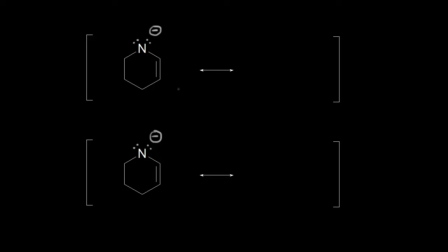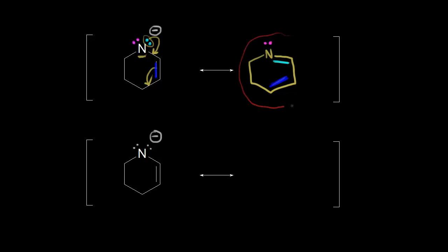Let's do another example. I'll start with the wrong way to do it and then talk about the correct way. A student might say: I have a negative one formal charge on this nitrogen, so I could take this lone pair of electrons and move it into here, which would push these electrons over to here. Let me draw what some students might think is a correct resonance structure — following the electrons, the light blue electrons on nitrogen move into here, dark blue electrons move down to here. So on the right, why is this not a correct resonance structure?